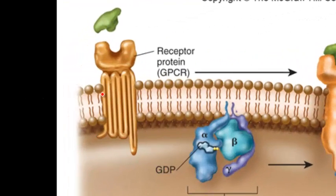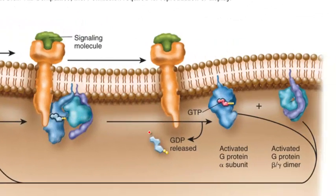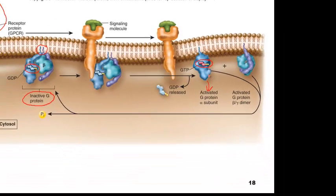G-protein coupled receptors have seven transmembrane spanning domains, which are likely alpha helices. In the off state, when the ligand binds the receptor, the activated receptor now has an affinity for a G-protein — a lipid-anchored protein that, when not associated with the receptor, has GDP bound. When the receptor is on, GDP is released and GTP is bound. In its GTP-bound state, this protein is active and can target other proteins to mount a response.